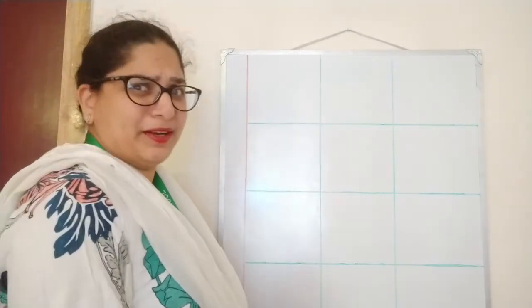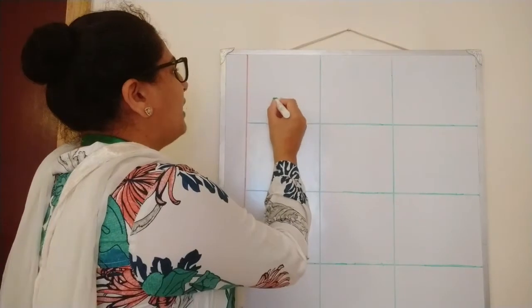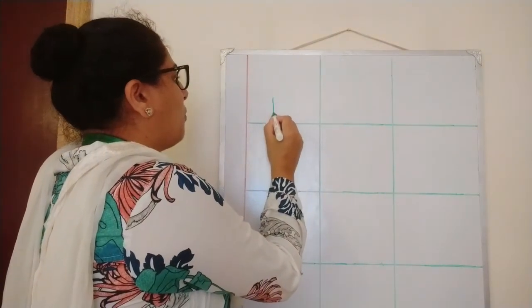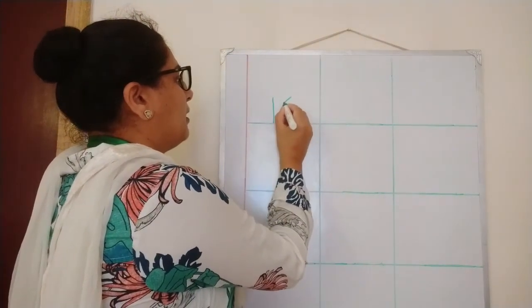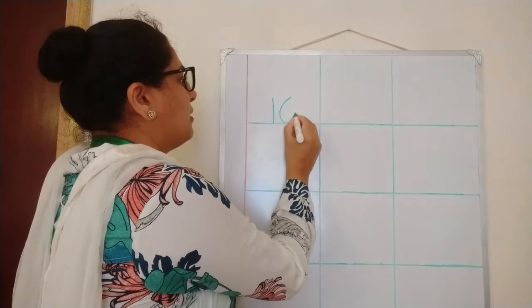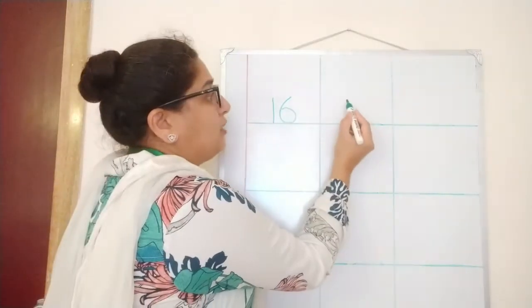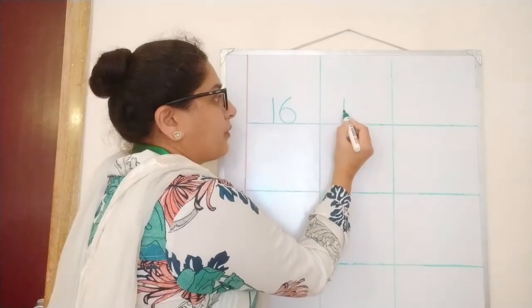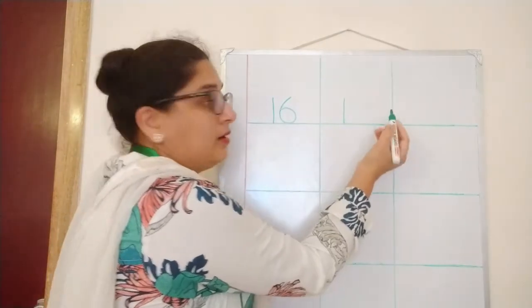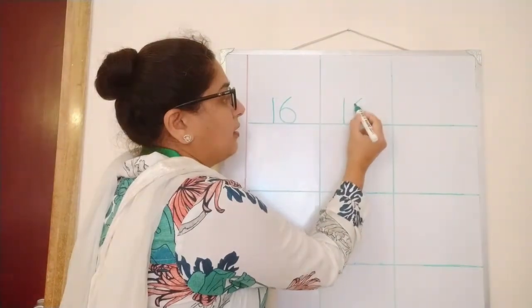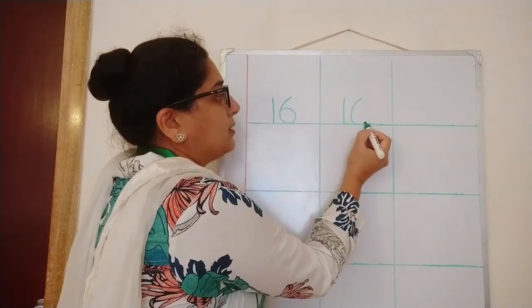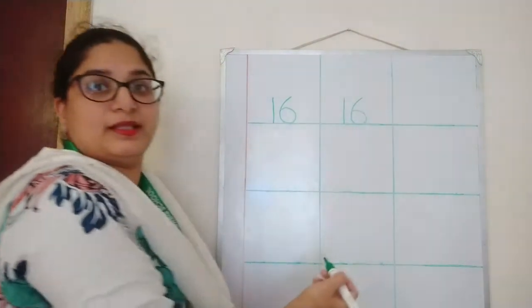Number 16 is very simple, right? It is 1, 6, 16. Can you see children? 1 and 6, 16.